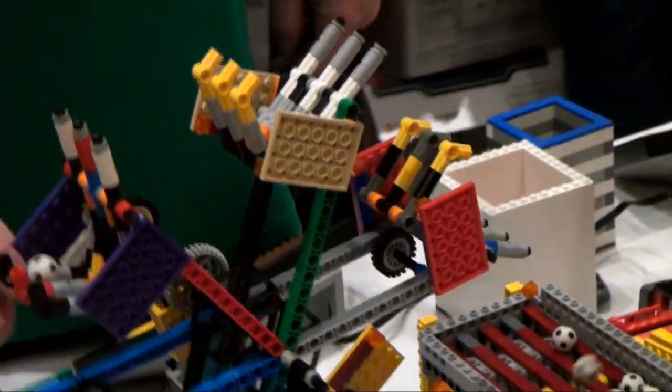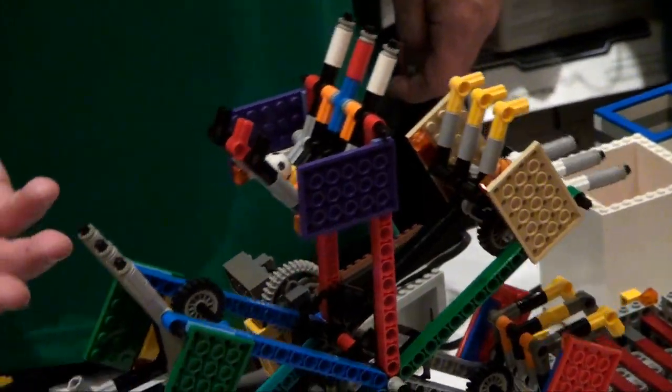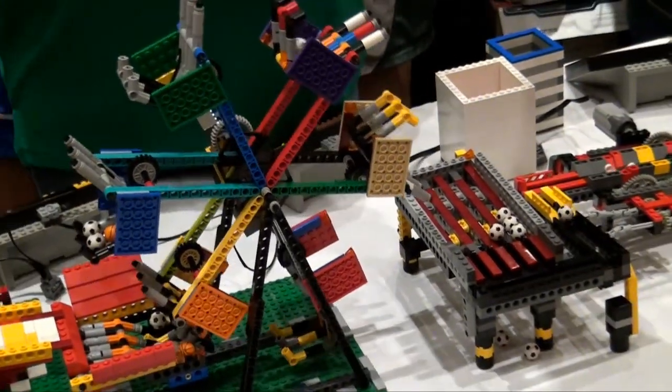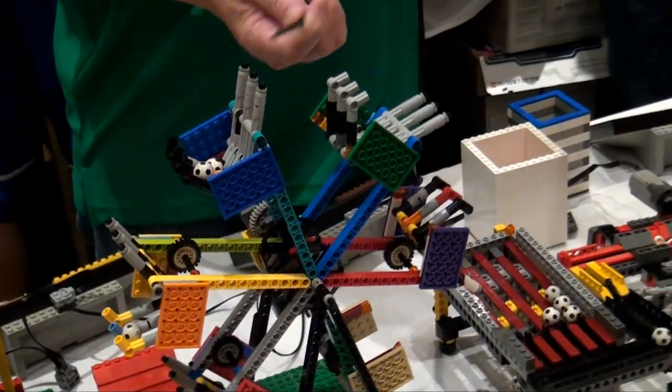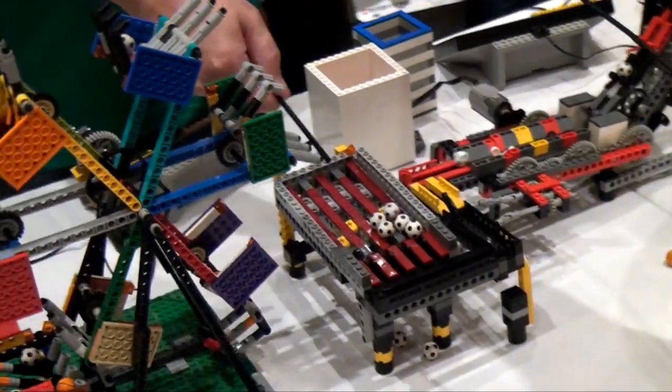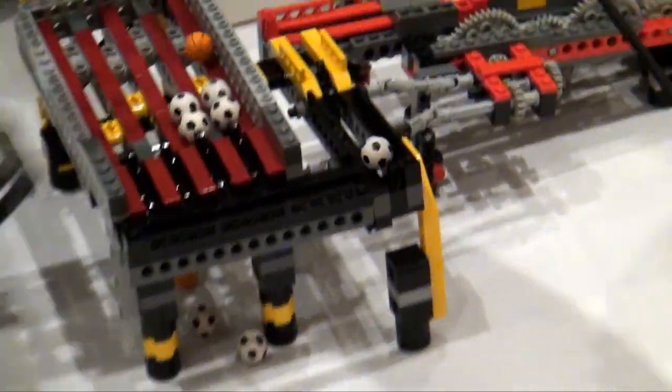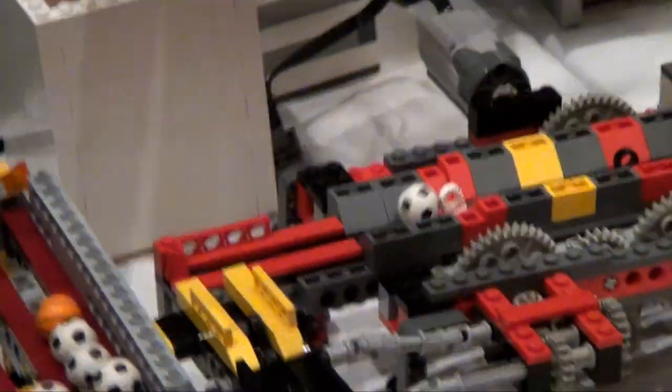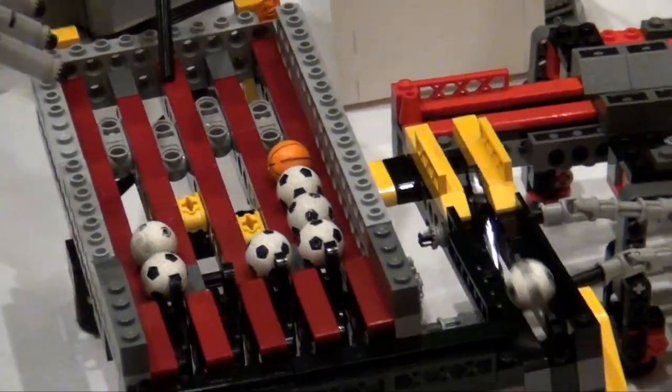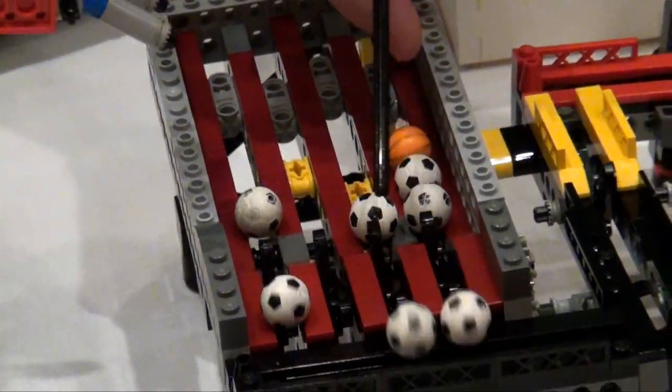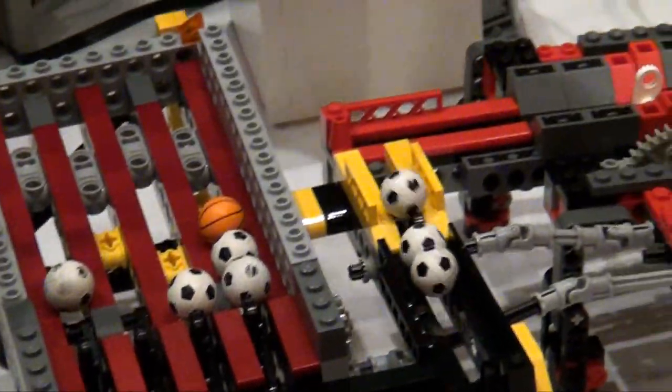From there they go into this small wheel which picks them up, brings them over and as this reaches to the top there's a point where it flips and it drops the balls down into the next module. From there this brings them up and they can ride in parallel very slowly and they get dumped and they're brought down as a trail.